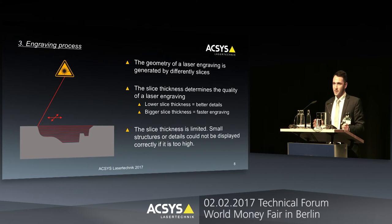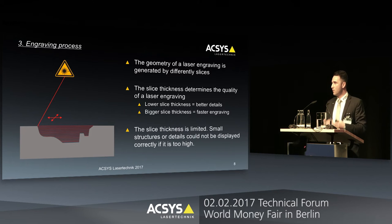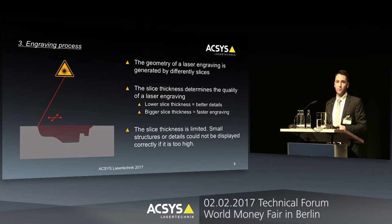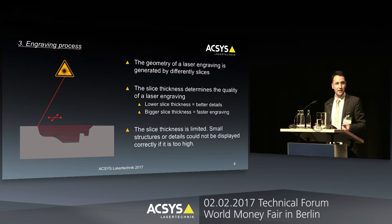Let's speak about the engraving process. When you design your model in ArtCam and send it to our machine, the model gets sliced — an example shown here on the left side. The slice thickness determines the quality of the engraving: it is basically how much material we remove for one single slice. A lower slice thickness results in more slices overall and better detail or quality. A bigger slice thickness means fewer slices, resulting in faster engraving. It's important to understand that slice thickness is limited — too big a value and details or micro engravings cannot be displayed correctly.